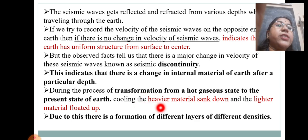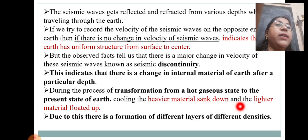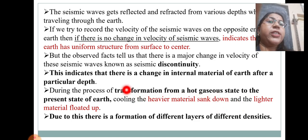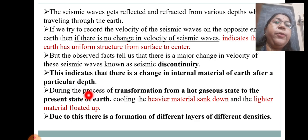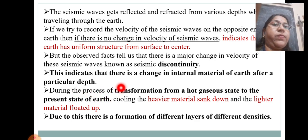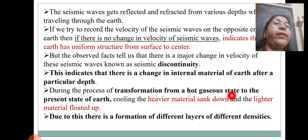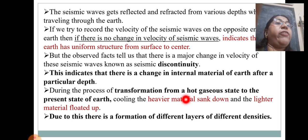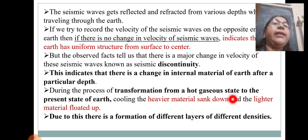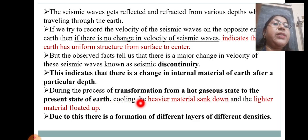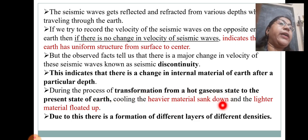Due to this process — the transformation from a hot gaseous state to the present state of Earth — the heavier material sank down and the lighter material floated up, resulting in the formation of different layers of different densities.